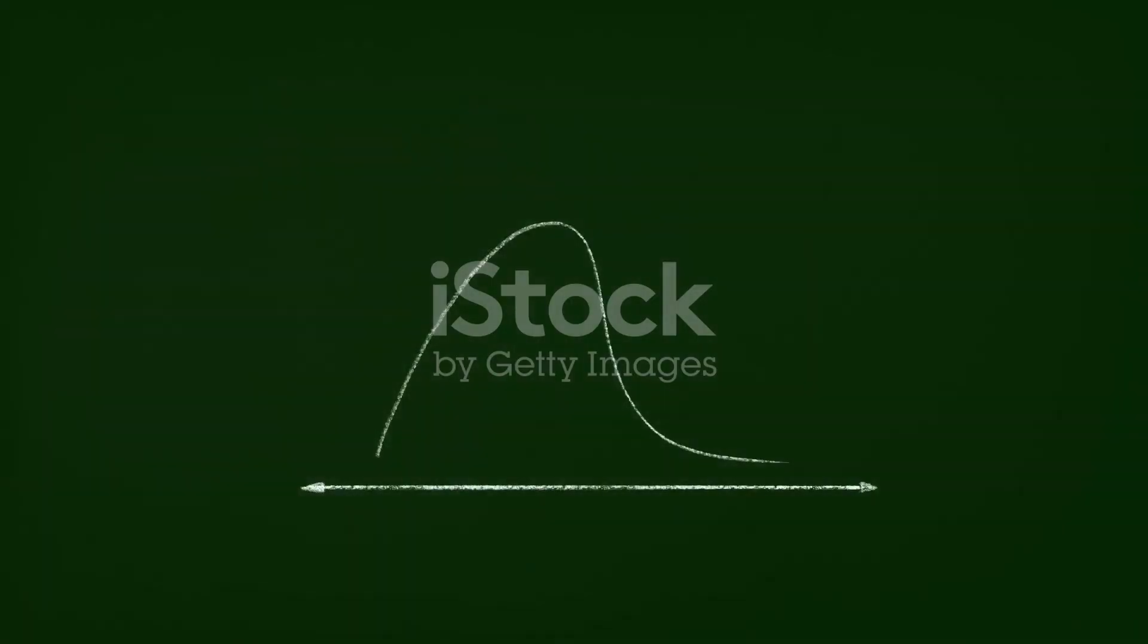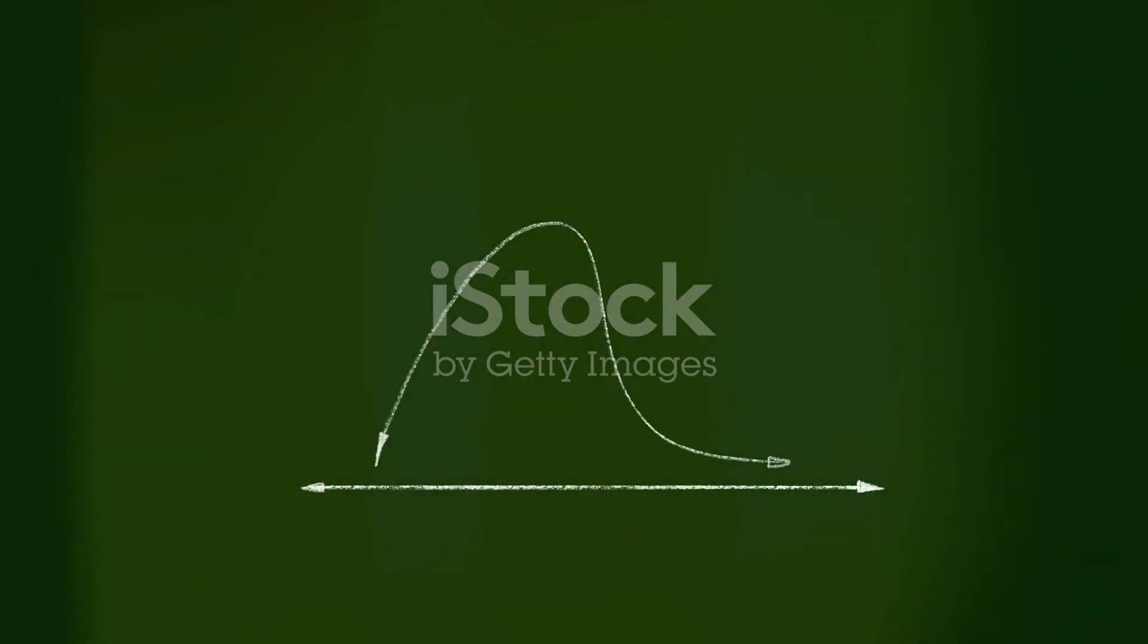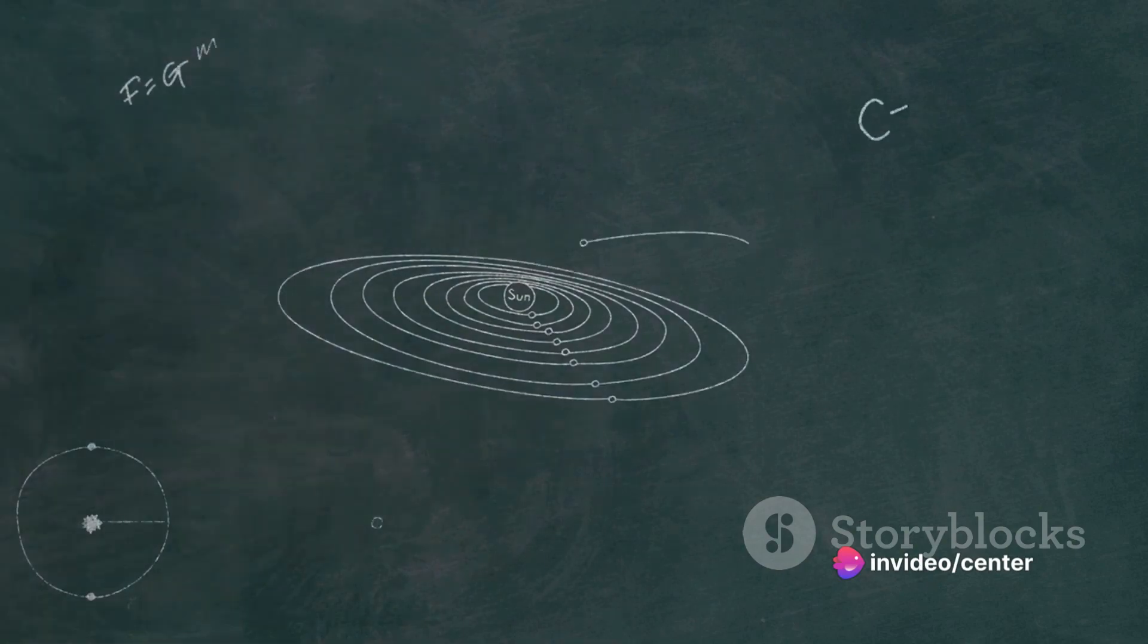Then there's distributivity. A dot B plus C equals A dot B plus A dot C. And let's not forget about associativity and linearity. These properties make the dot product a powerful tool in mathematics.